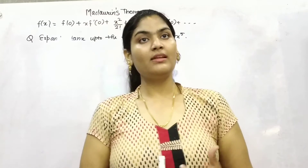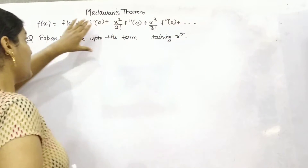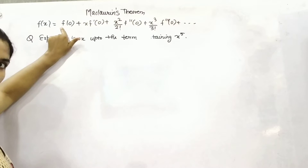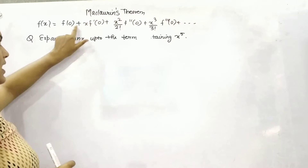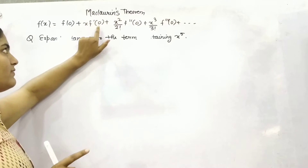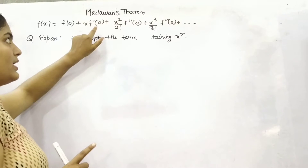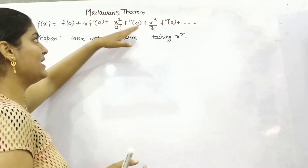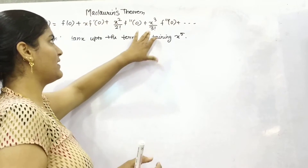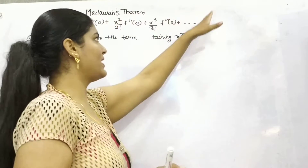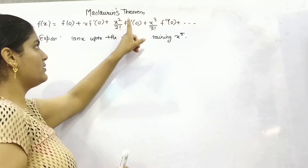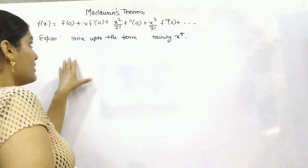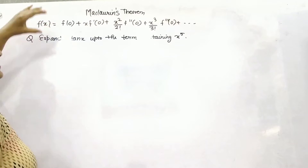With the help of Maclaurin's theorem, the formula for finding f(x) is: f(0), the value of the function at point 0, plus x times the first derivative at 0. You have to put 0 in terms of the variable and keep going with 2 factorial, 3 factorial, x squared, x cubed, x raised to the power 4 — single derivative, double derivative, triple derivative, and so on.